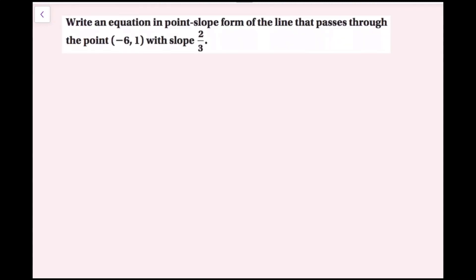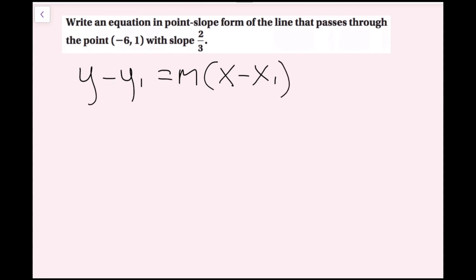For this example we're going to write an equation in point-slope form of the line that passes through the point negative 6 comma 1 with a slope of two-thirds. Point-slope form is y minus y1 equals m times quantity x minus x1. All I'm going to do is plug in my values into this formula. My slope is two-thirds, so I'm going to change m to two-thirds.